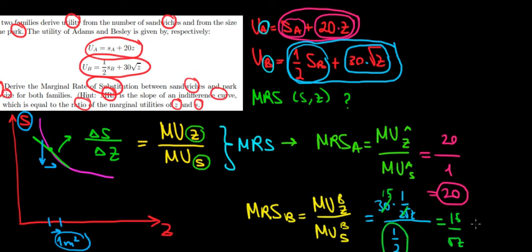Divided by 1 over 2 means multiplying with 2. So we're multiplying with 2. 15 times 2, that's going to be equal to 30 divided by square root of Z. That's the marginal rate of substitution for family B.